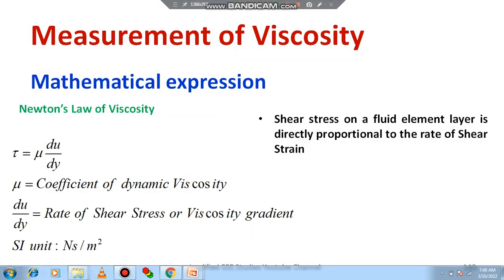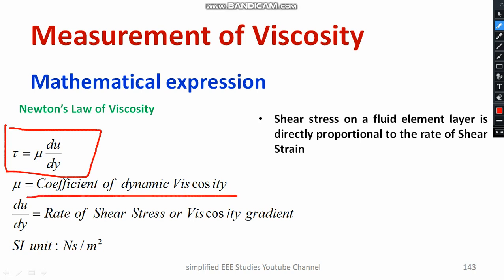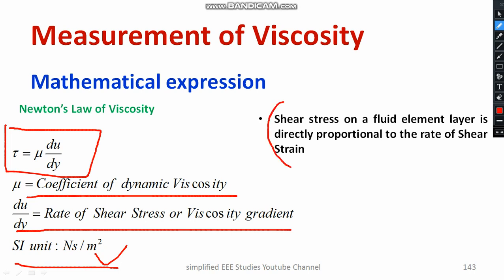What is the mathematical expression of viscosity? Using Newton's law of viscosity, we can represent a general formula for computing viscosity. The shear stress tau is given by: tau = mu × (du/dy). Here, mu is the coefficient of dynamic viscosity, and du/dy is known as the rate of shear strain or velocity gradient. The SI unit of dynamic viscosity is Newton-second per meter square. The shear stress on a fluid element layer is directly proportional to the rate of shear strain, as clearly explained by this equation.